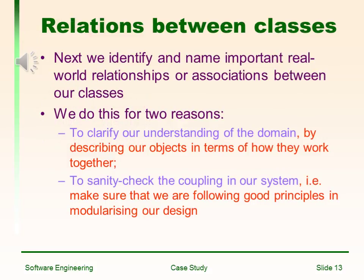Relationship between classes. Next, we identify and name important real-world relationships or associations between our classes. We do this for two reasons: to clarify our understanding of the domain by describing our objects in terms of how they work together, and to sanity-check the coupling in our system — making sure that we are following good principles in modularizing our design.